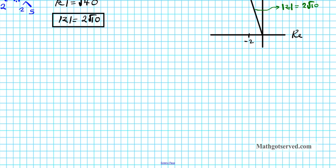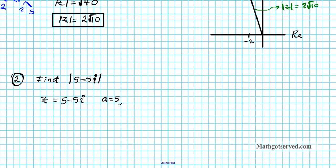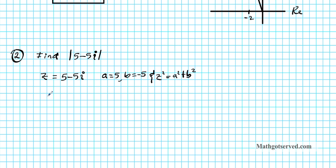Let's look at question 2: find the absolute value of 5 minus 5i. We write z equals 5 minus 5i. From this format we can see that a equals 5 and b equals negative 5. Remember never to take the i along with b, or you'll get a negative output that ruins your results. We know z squared equals a squared plus b squared.